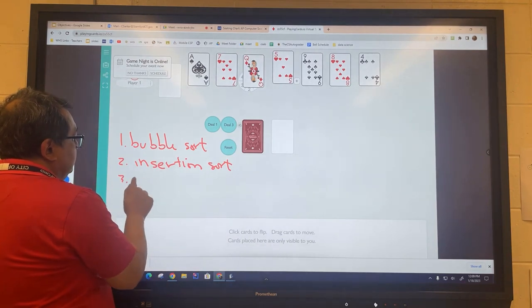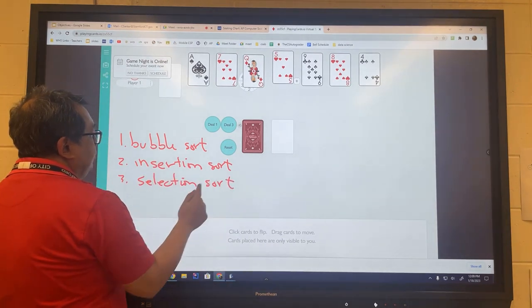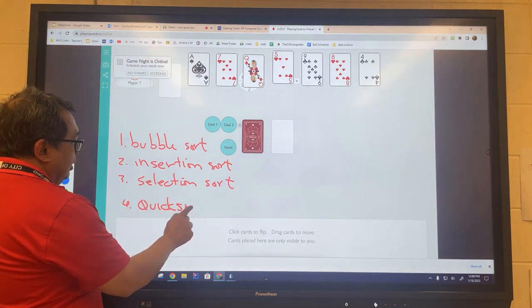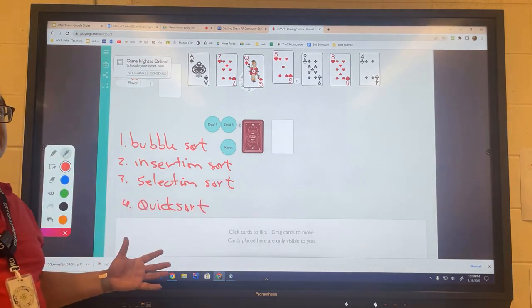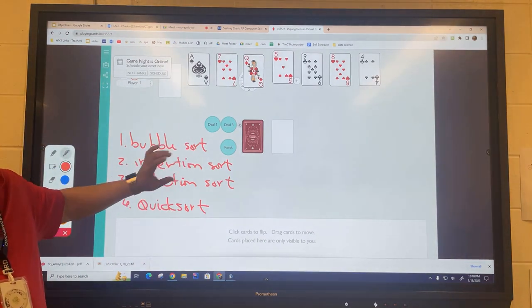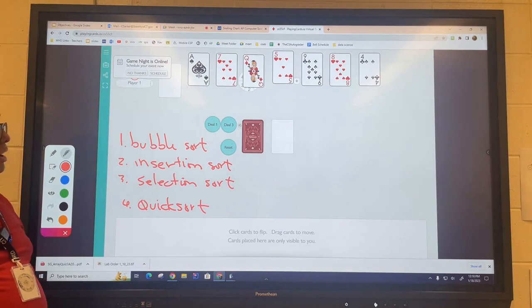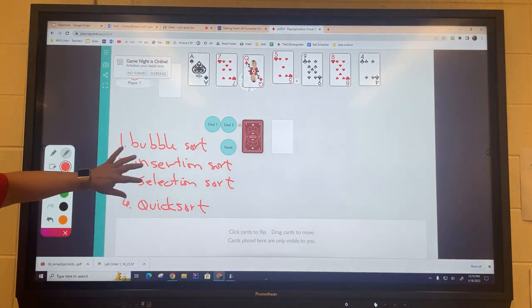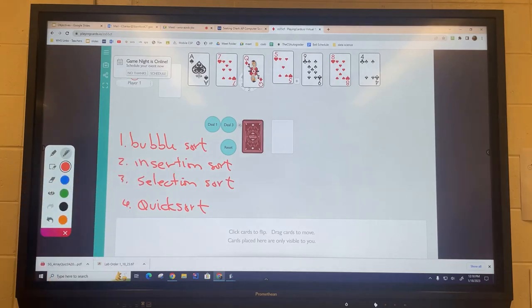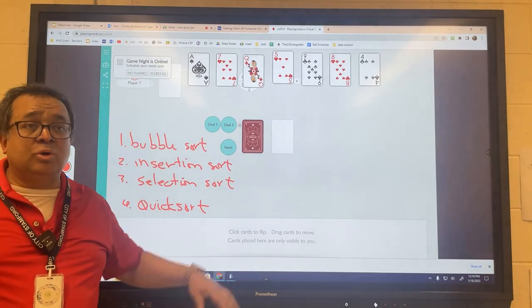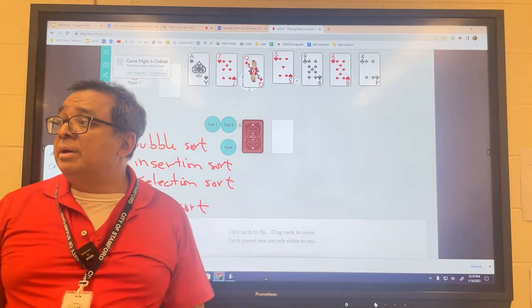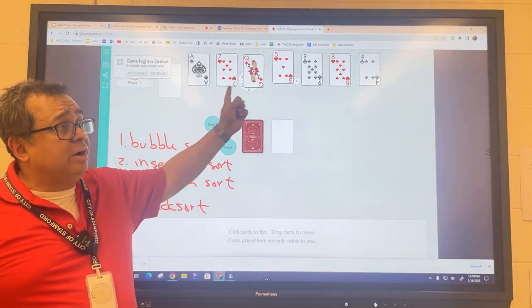Also there's a fourth technique called quick sort, which you don't need to know how to do but you just need to know how it exists and why it's better than these other techniques. So let's get started. We're going to at least get through the first two, maybe there'll be time to get through the last one. After I demonstrate this, you're going to try and practice, and then I'm going to ask the TAs to go around the room and check to see if you are doing the bubble sort correctly.